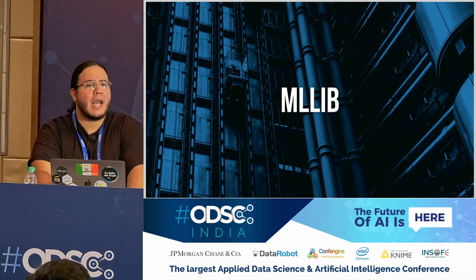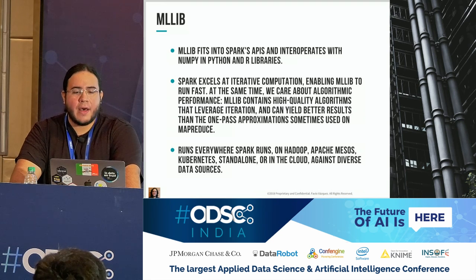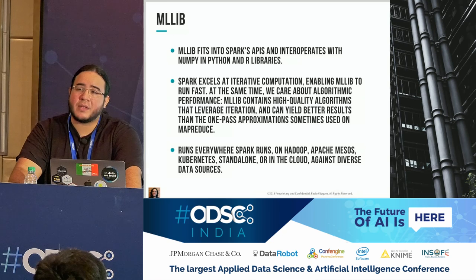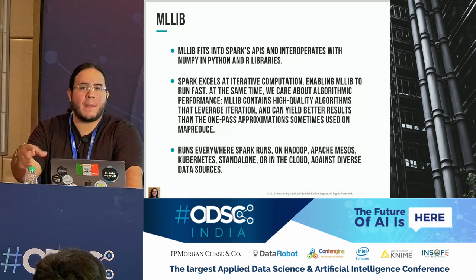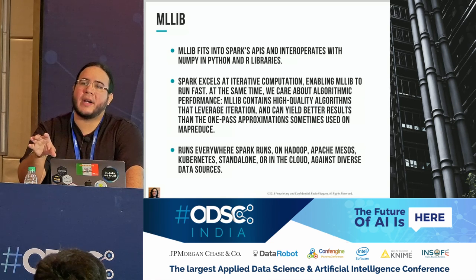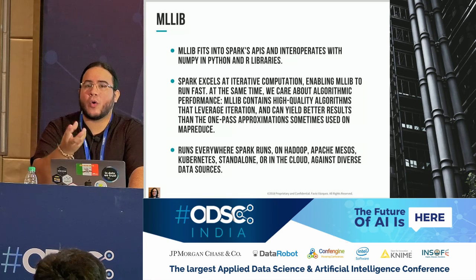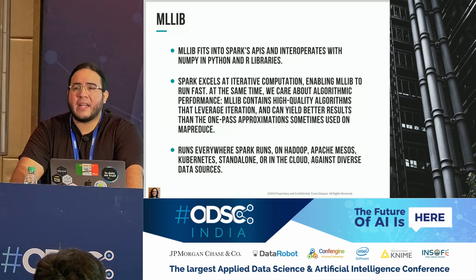So MLlib. MLlib is an awesome library that will help you to run your machine learning code in your cluster. It contains a lot of great algorithms for regression, classification, and clustering. It's the machine learning part of Spark. Right now, there's no specific plan to merge the deep learning part with MLlib, but it's in the discussions of the community. The deep learning part is in a different package on GitHub, open source, but not connected to the actual core of Spark. You can run MLlib on Hadoop, Mesos, Kubernetes, standalone, and with different data sources.